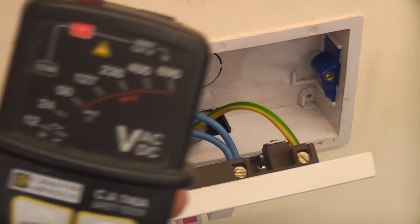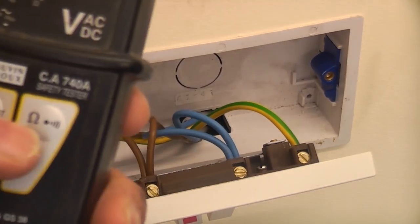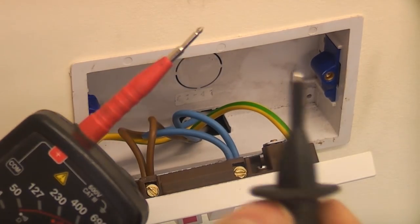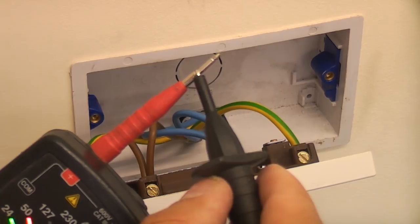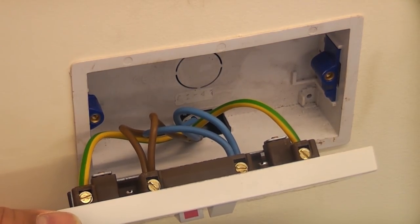We're now just going to check that the tester is working again, and we'll also check that the probes are still in good condition by doing a continuity test. So we can now safely say that that socket has been isolated correctly. I'm now going to undo all of the terminals.